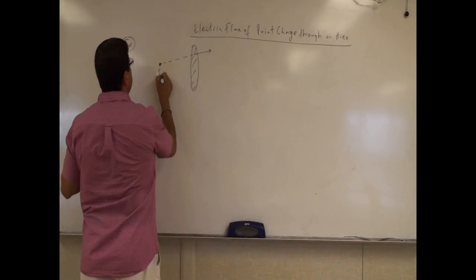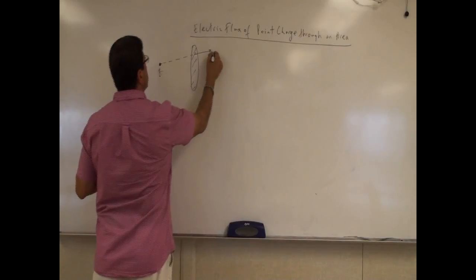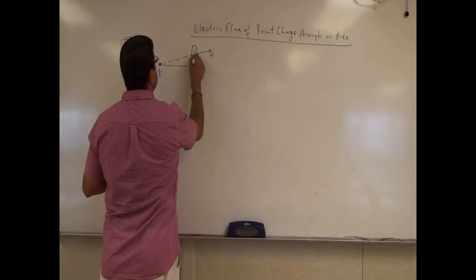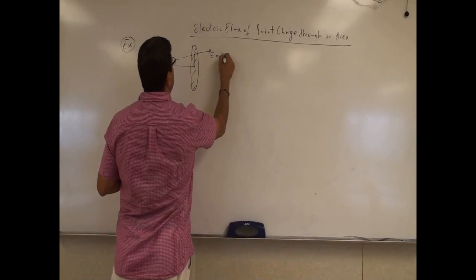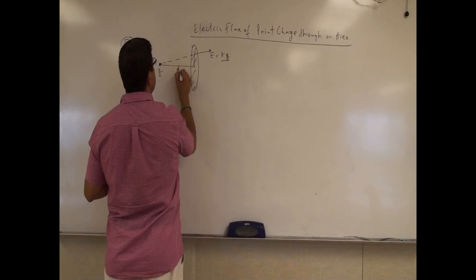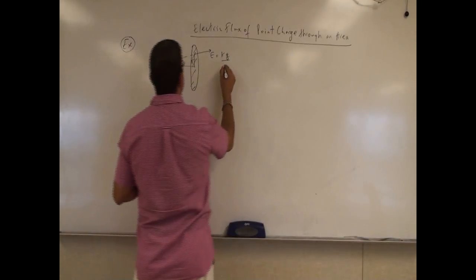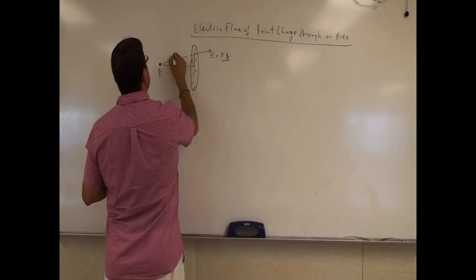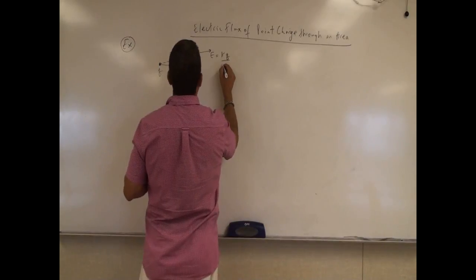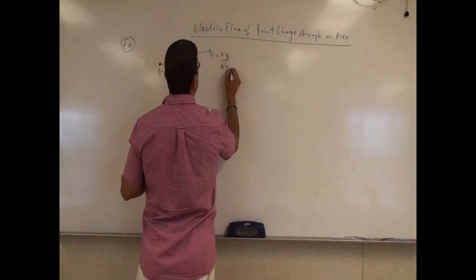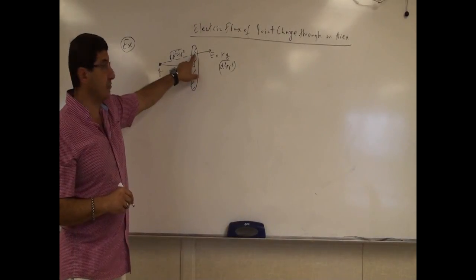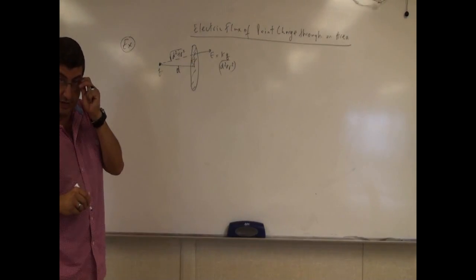The concept is: if you have a point charge, it has an electrical field a certain distance away. The electric field is given by the equation KQ divided by the total distance. So if we call this D and we call this R, the electric field is going to be KQ over the square root of D squared plus R squared, squared — so divided by D squared plus R squared. The electrical field at any point of that area is going to be KQ over D squared plus R squared.